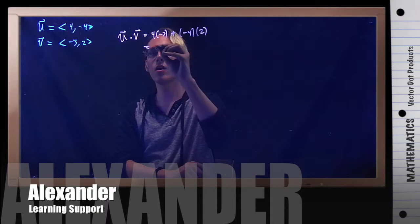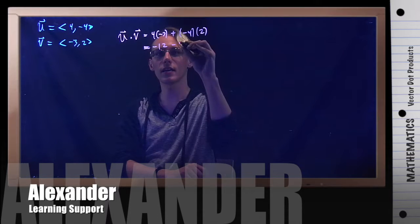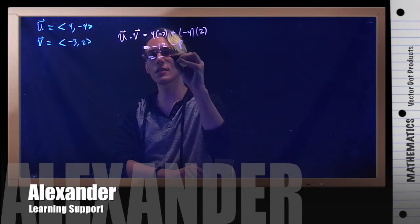And so in doing this, 4 by negative 3 is negative 12, and negative 4 by 2 is negative 8, which gives negative 20.